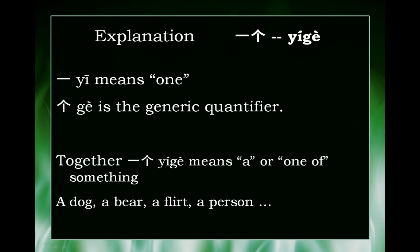一 by itself means 'one.' If you've ever learned to count in Chinese, you'll know counting starts with 一二三, which means one, two, three. So 一 means one. 个 is the most generic quantifier.